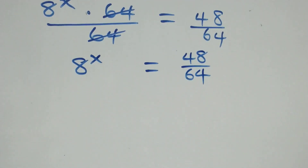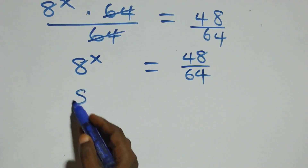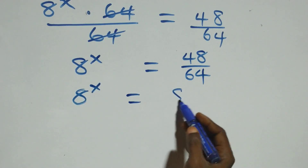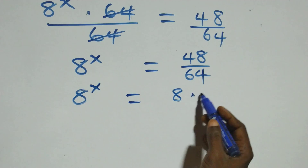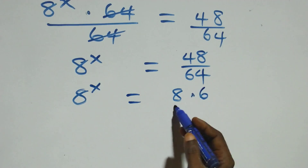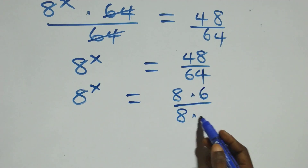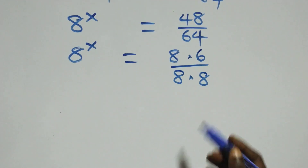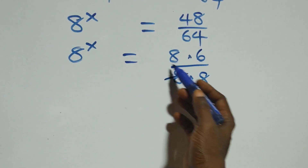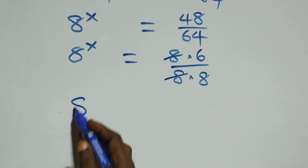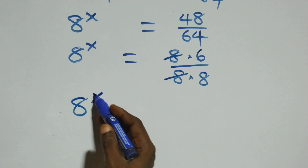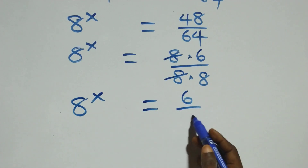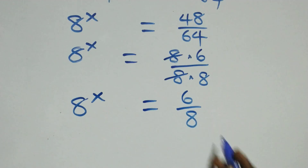We can write this as 8 raised to power x equals 8 times 6 over 8 times 8. Here 8 cancels each other and we have 8 raised to power x equals 6 over 8.